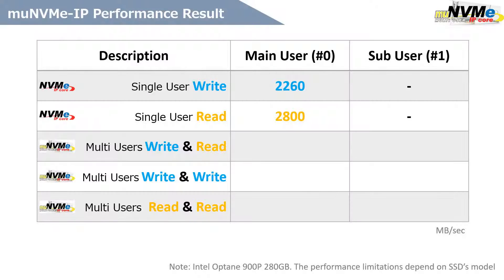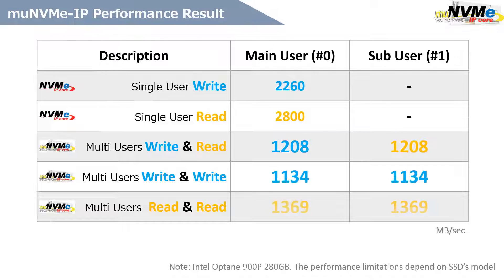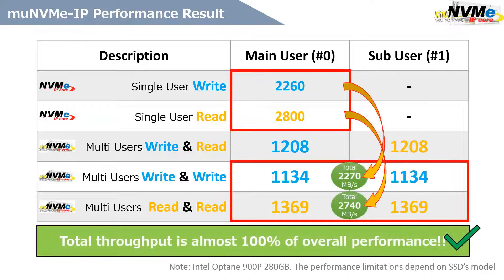The total transfer speed for multi-user simultaneous access using the MU NVMe IP core is almost the same as the performance result for single user access with the standard NVMe IP core, which makes SSD performance more efficient, achieving the highest possible throughput while sharing access.